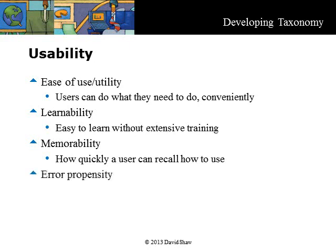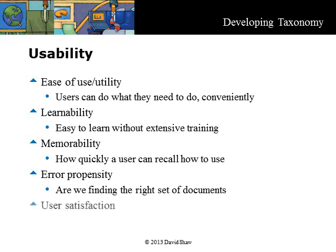User satisfaction is a complex factor that is not measured easily. It is not a single construct that we can use to assess the effectiveness of a system. It is influenced by other factors, including the system output, user expectation and attitude, perceived ease of use and usefulness, the system type, and the task that we are trying to execute. Reference to a system here is deliberate. As you will find in a future module on metadata, implementation factors in a specific system can play a big role in the usability of a taxonomy. The user should feel the system implementation is coherent, compact, sequential, and logical.